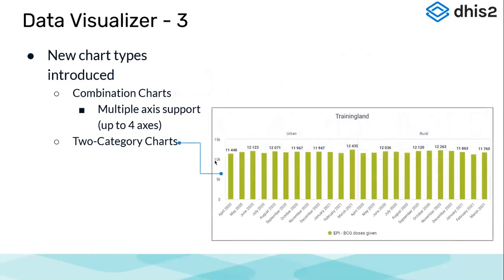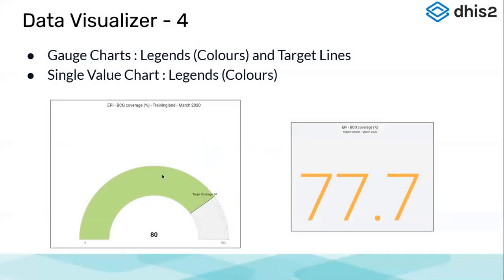Requirements also came in to support multiple categories on the same chart. Earlier you could only see the monthly distribution of urban or rural cases separately, but now on a single bar diagram you can compile information for multiple categories — grouping urban doses given in one slot and rural areas in the next for comparison. Two-category charts are supported from version 2.35 onwards with up to four axes. Gauge charts were available since version 2.31 but now are supported by legends, and you can add target and baseline lines so you can see which indicators are covering your baseline and which are crossing your target.